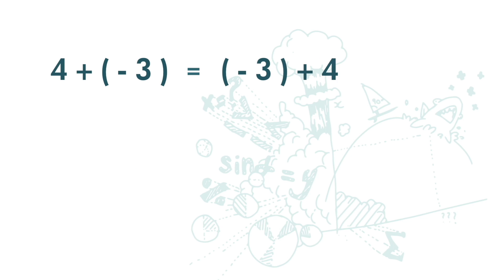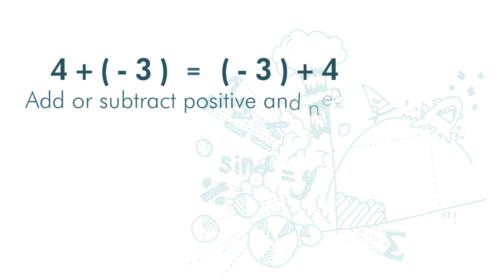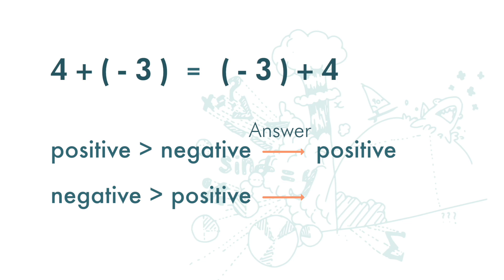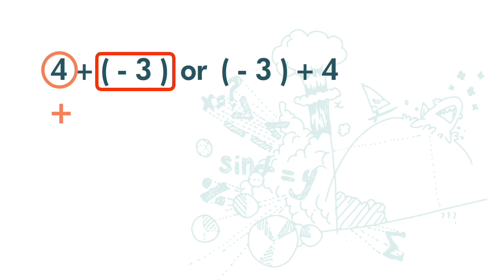Now we know that 4 plus negative 3 and negative 3 plus 4 are the same. When adding or subtracting positive and negative integers, first look at the value — the absolute value — without the sign. If the positive number is greater, the answer is positive. If the negative number is greater, the answer is negative. For 4 plus negative 3, positive 4 is greater, so the answer is positive. We use the greater value minus the lesser value: 4 minus 3 equals 1.